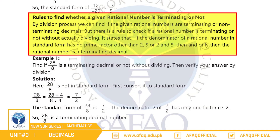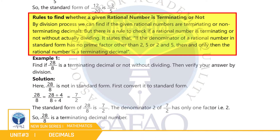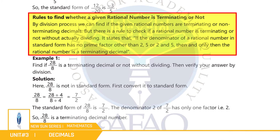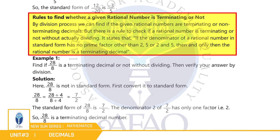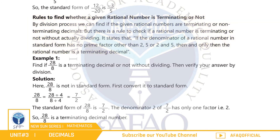اب ہم rules to find whether a given rational number is terminating or not پڑھیں گے، page number 45۔ ہم division method کے تحت یہ معلوم کر سکتے ہیں لیکن اس کے علاوہ بھی ایک طریقہ ہے: اگر rational number standard form میں ہو اور اس کے denominator میں 2 یا 5 یا دونوں کے علاوہ کوئی اور prime factor نہ ہو تو تب ہی rational number terminating decimal ہوگا۔